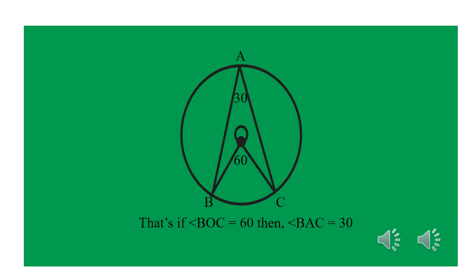In example one, we have the shape with A, B, C and the angle at the center is 60°. The theorem says the angle at the center is twice the angle at the circumference, so if angle BOC is 60°, then angle BAC is 30° — that is 60 divided by 2. Conversely, to get angle BOC from angle BAC, multiply by 2: 30 times 2 equals 60.